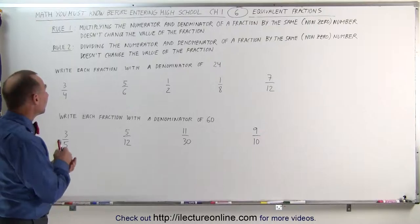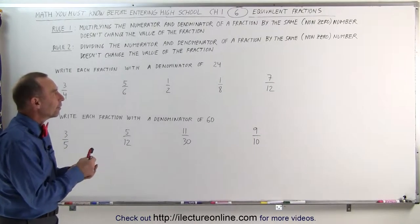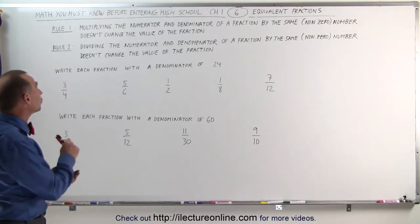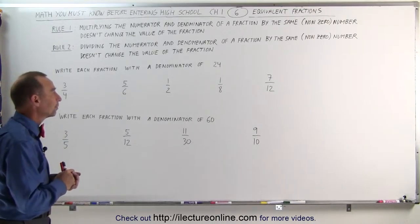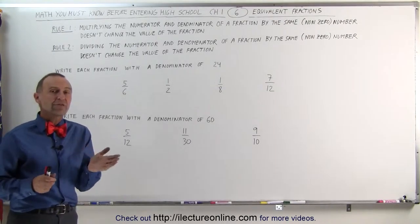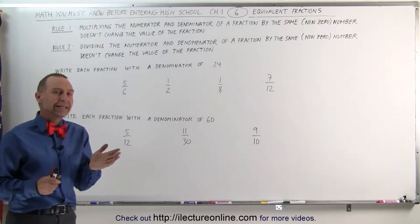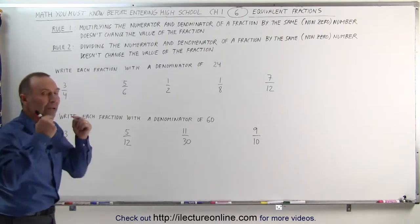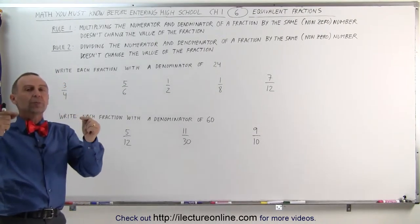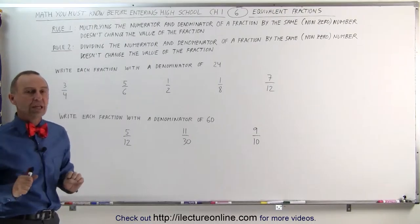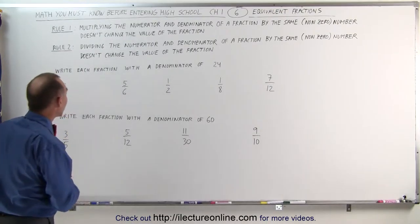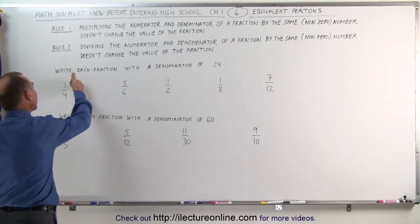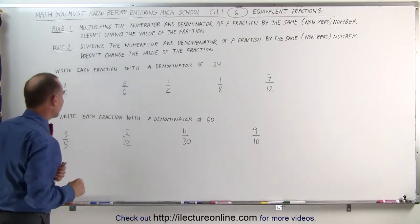The second rule: dividing the numerator and denominator of a fraction by the same non-zero number also doesn't change the value of the fraction. So when they ask you to write one fraction in a different way — for example, with a different denominator — you want the ratio of the numerator to the denominator not to change. We can accomplish that by multiplying or dividing the numerator and denominator by the same number.